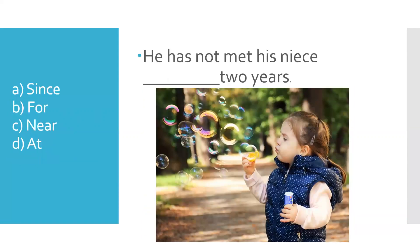The second one. Can you do this? He has not met his niece, dash, two years. Should it be since, for, near or at? The right answer is for. He has not met his niece for two years because we are talking about a period of time. If you talk about one particular point in time, then you would say since.